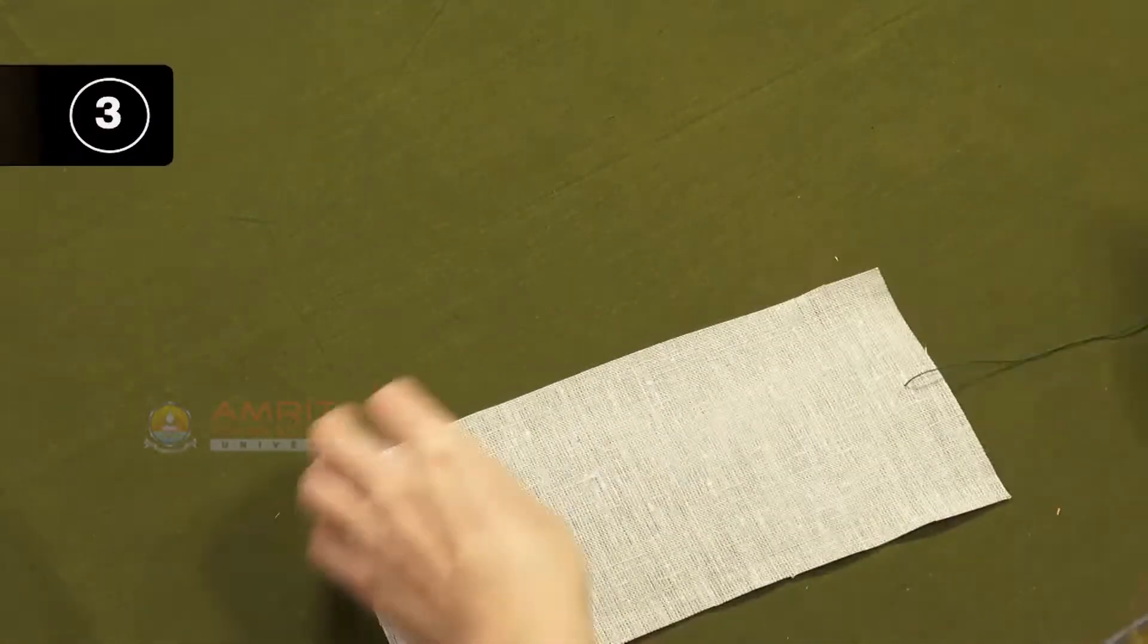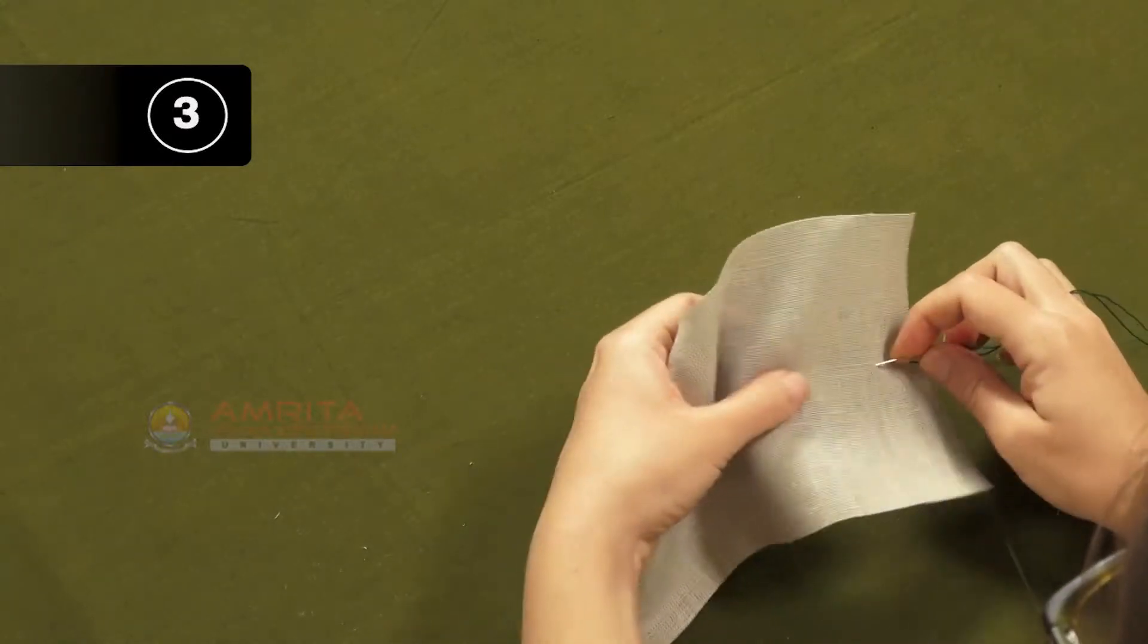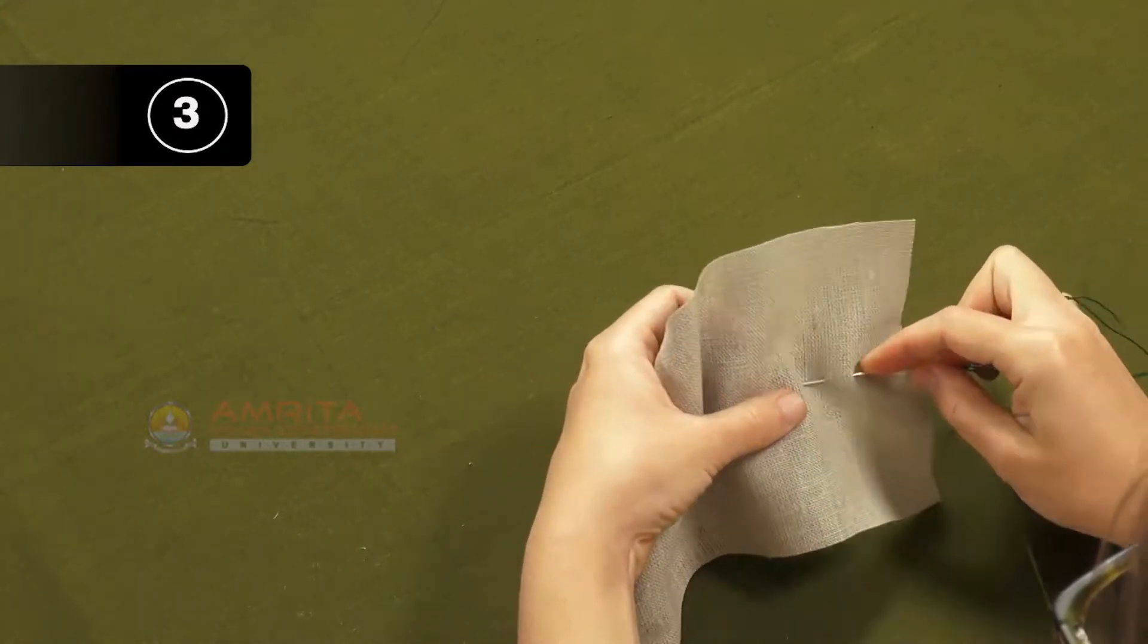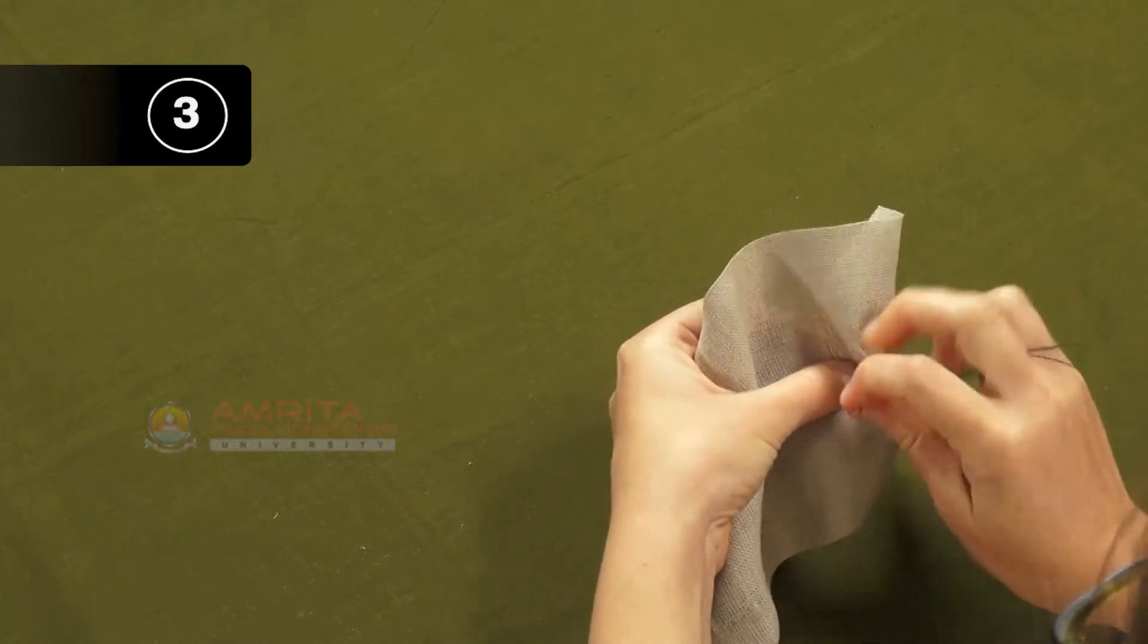Step 3: Make evenly spaced stitches of uniform length by taking the needle in and out of the fabric.